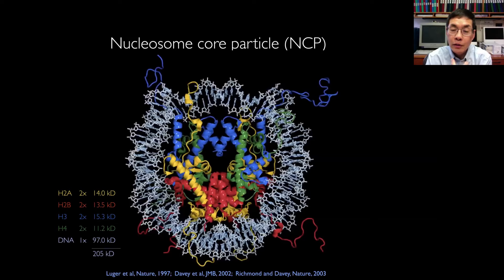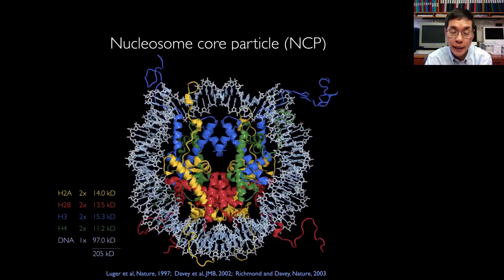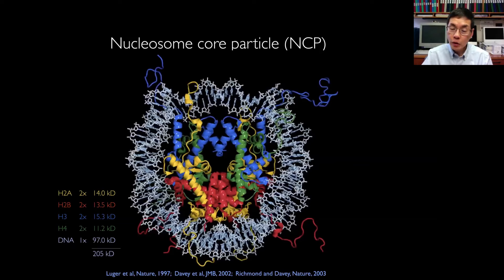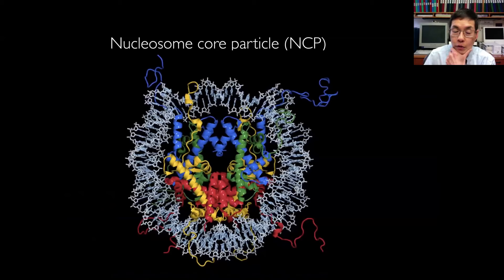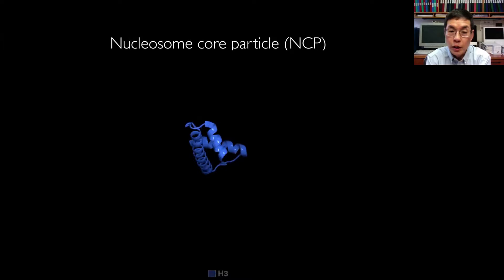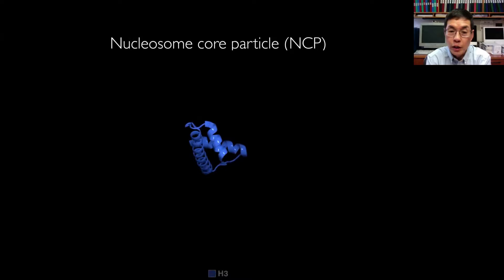The nucleosome core particle contains an octamer of four histones wrapped by about 150 base pairs of DNA. Based on the initial structural work — Karen Luger in Tim Richmond's lab solved the original structure in 1997, and Kurt Luger then solved a high-resolution structure — I'd like to remind you of the architecture. It all comes down to the histone fold. Histone H3 forms a histone fold: a short helix, a loop, a long helix, a loop, and a short helix.